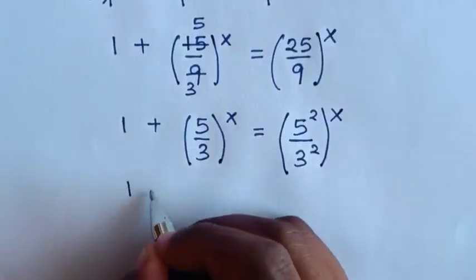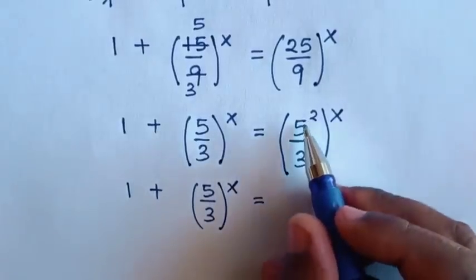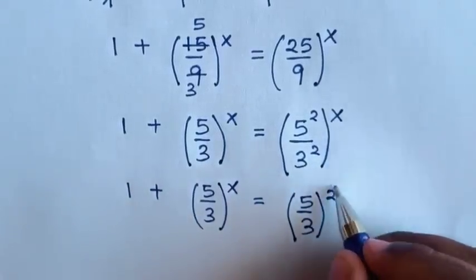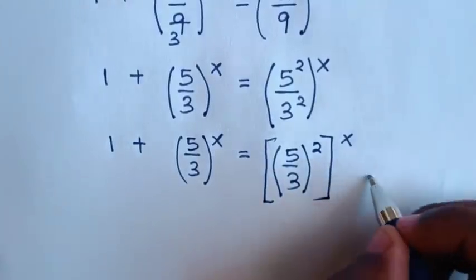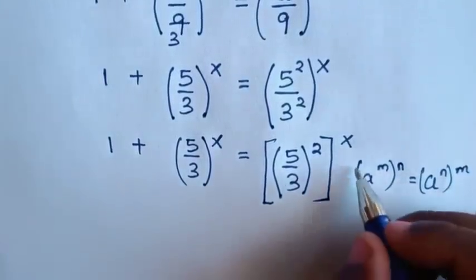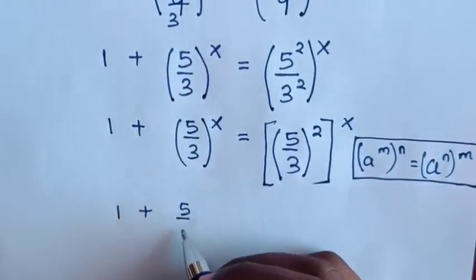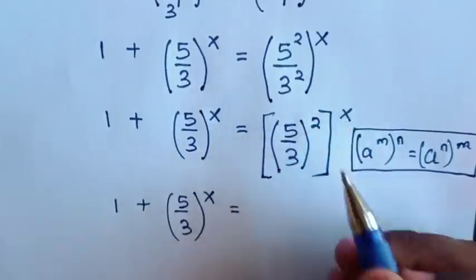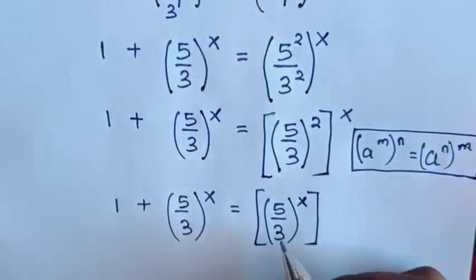Then our equation will be 1 plus (5/3) bracket power of x is equal to — in here, power of 2 is common — so it will be (5/3) bracket power of x. We will apply the exponential rule: a power of m, bracket power of n, is equal to a power of n bracket power of m. So we change the position of the powers, giving us 1 plus (5/3)^x equals (5/3)^x bracket power of 2.